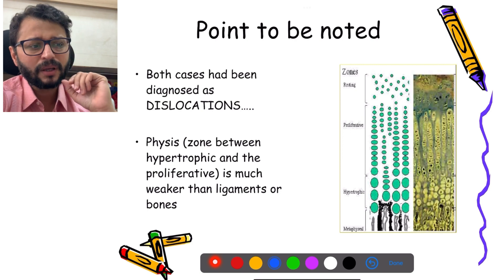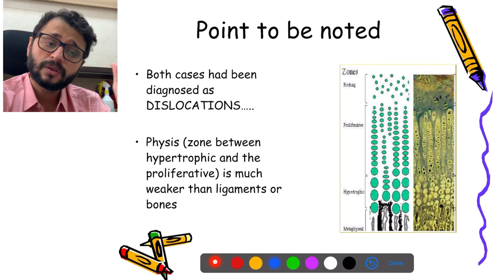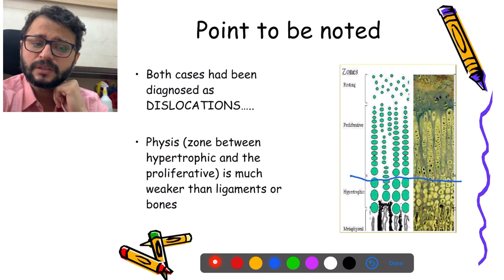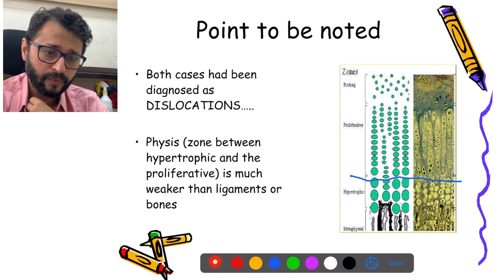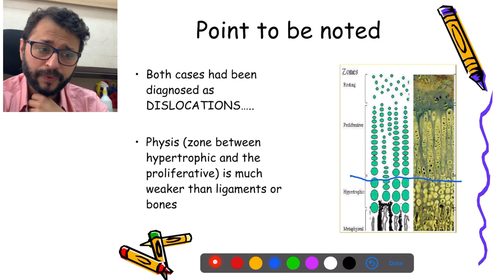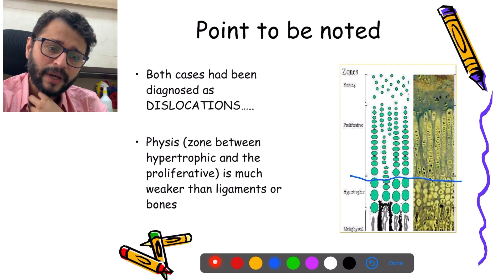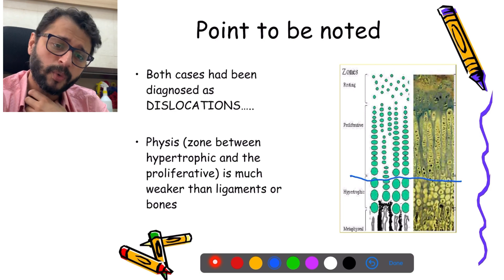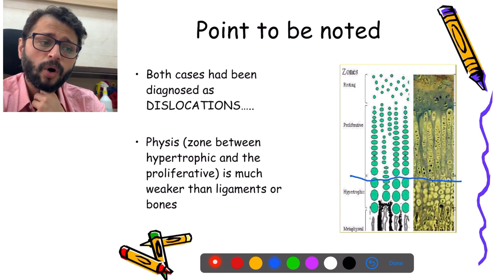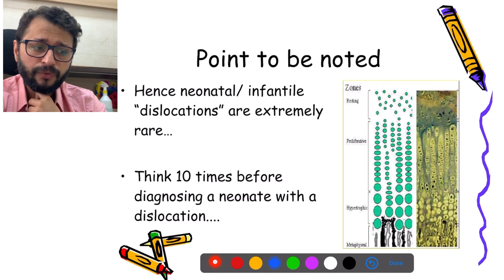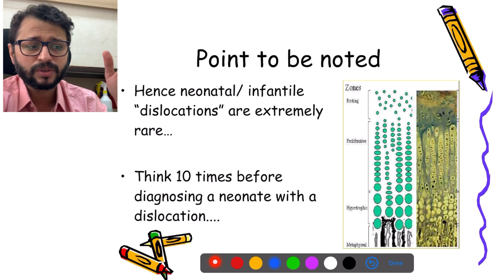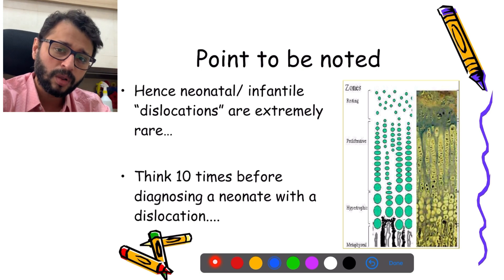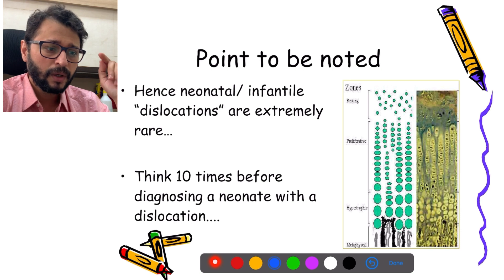This is completely remodeled at one year of age. What should be remembered is that both cases were diagnosed as dislocations, but these are not dislocations. The physis cleaves at the zone between the proliferative and hypertrophic zones. The physis is a much weaker zone compared to the ligaments or bones, and hence a dislocation almost never occurs in a neonate. If you have a diagnosis of dislocation, think ten times — it is almost always a physial injury.